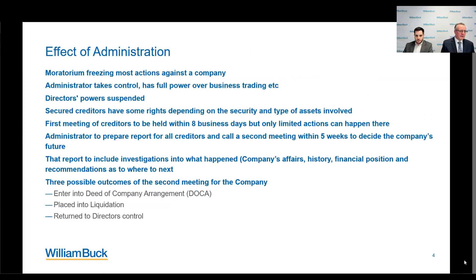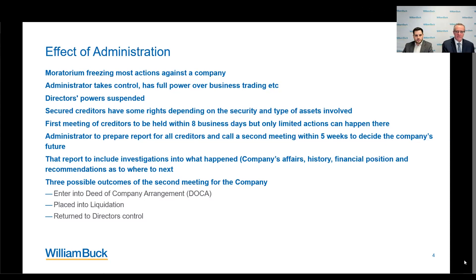The effects of administration: the first is a moratorium — a freezing order against any actions against the company. The administrator takes control and has significant powers. The directors' powers are suspended, though they still have obligations — including to report and assist the administrator — but their power of contracting on behalf of the company or dealing with assets is frozen. There are two types of secured creditors: those with an PPSA security covering all assets, or a PMSI where they have specific security over individual assets. A secured creditor can appoint a receiver and, in certain circumstances, take possession of specific assets.